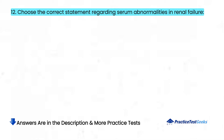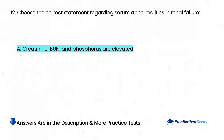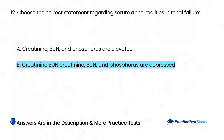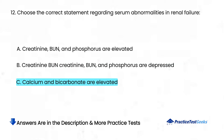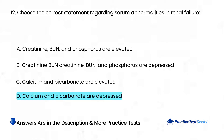Choose the correct statement regarding serum abnormalities in renal failure: A. Creatinine, BUN, and phosphorus are elevated. B. Creatinine, BUN, and phosphorus are depressed. C. Calcium and bicarbonate are elevated. D. Calcium and bicarbonate are depressed.